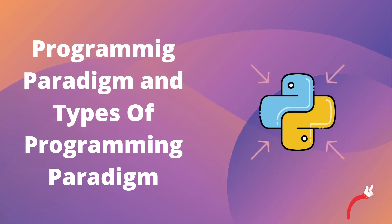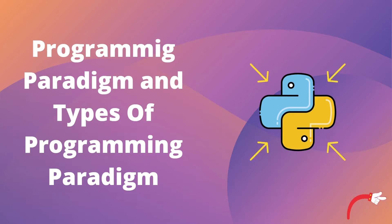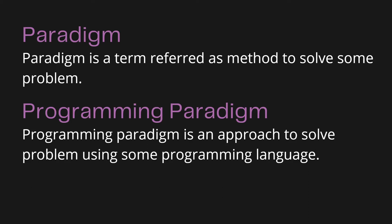In this video we are going to see programming paradigms and their types, before starting object-oriented programming. We should know what a paradigm is and which type of programming paradigm object-oriented programming fits into. A paradigm is a term that refers to a method to solve some problem. Similarly, a programming paradigm is an approach to solve a problem using some programming language.